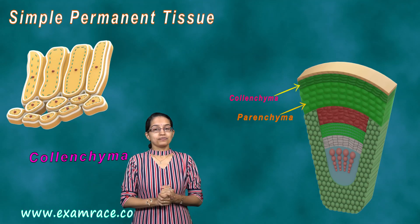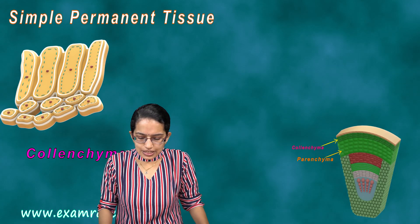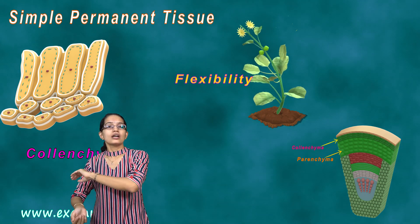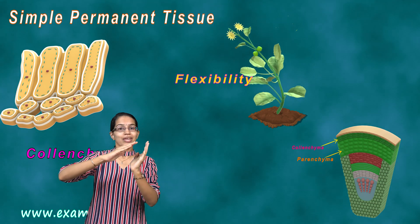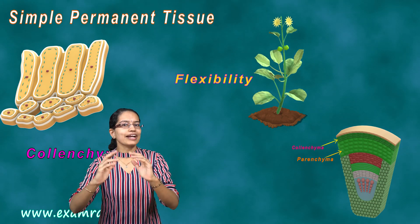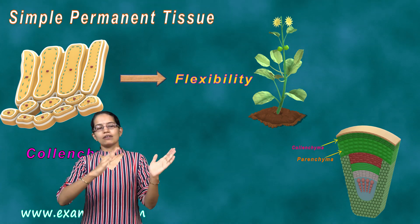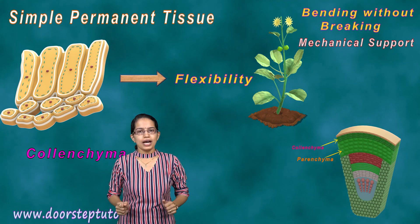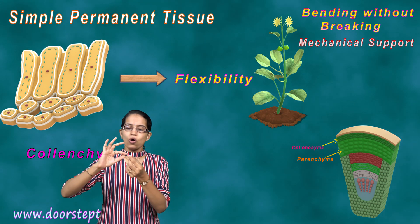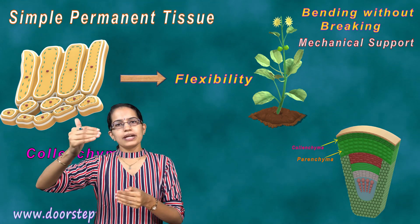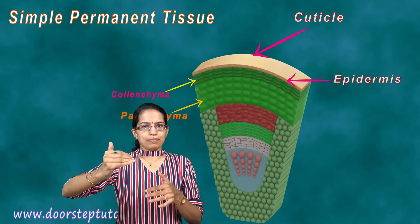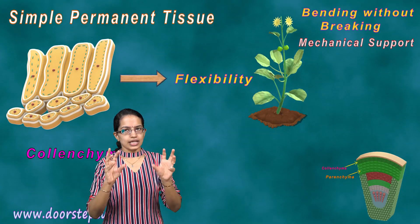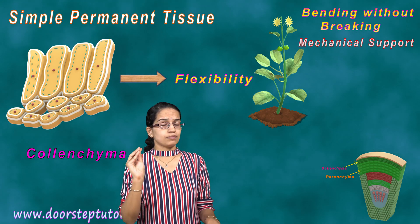The next is colenchyma. Colenchyma is basically seen for flexibility. If you have seen a strong gust of wind, the plant does not break down — it just bends and regains its shape, and that flexibility is provided by colenchyma. Colenchyma provides flexibility and bending without breaking. It provides firm mechanical support to the plants and is usually seen in the region of the leaf stalks below the epidermis — immediately below the cuticle, below the epidermis, you have colenchyma.